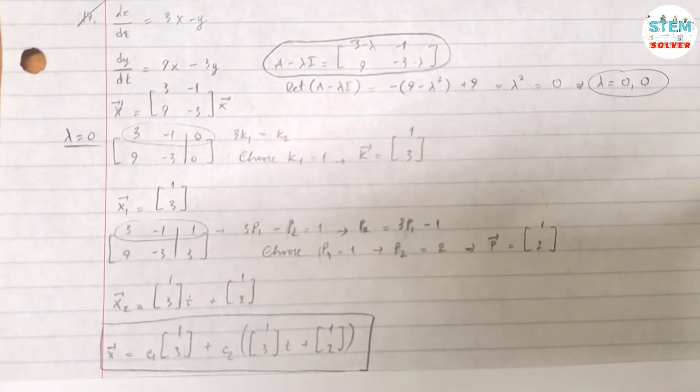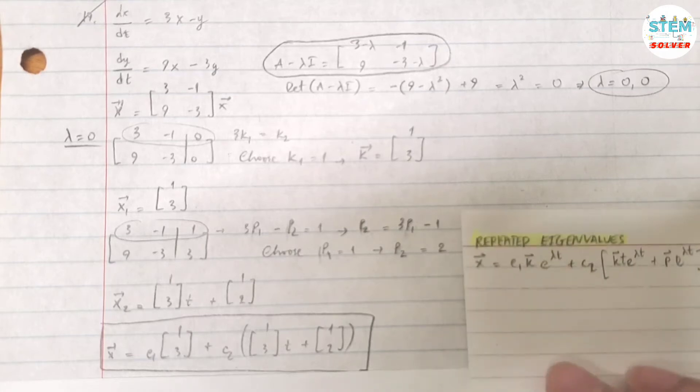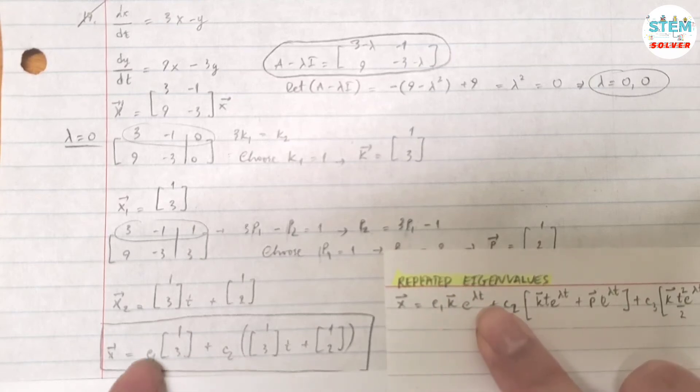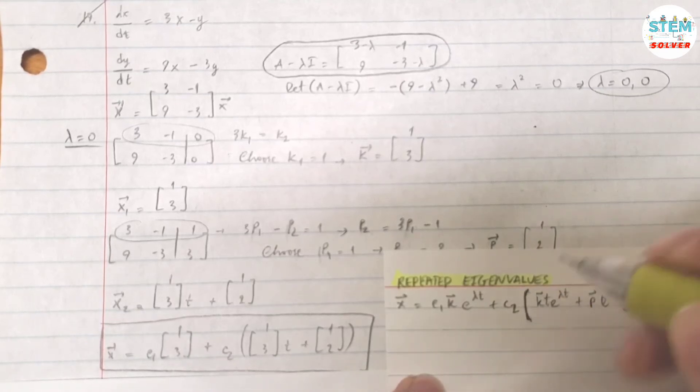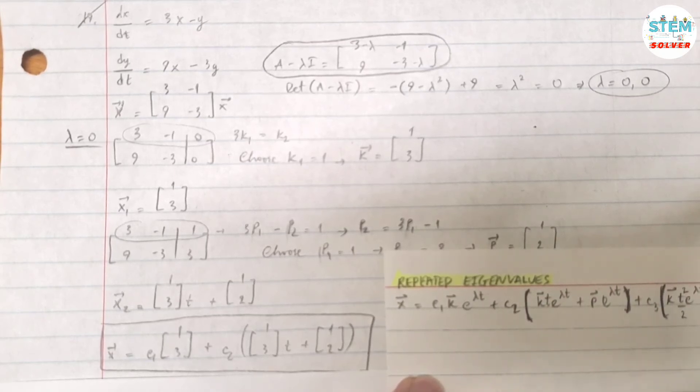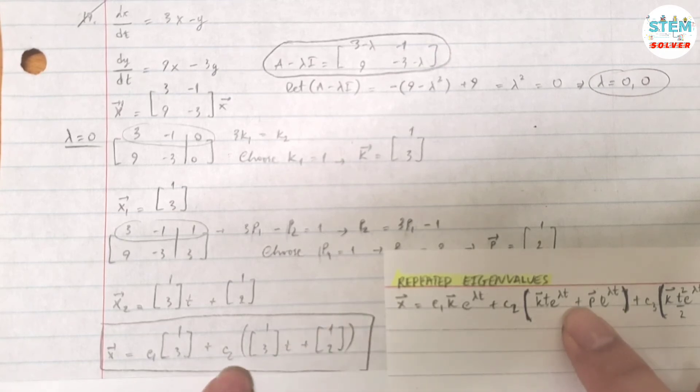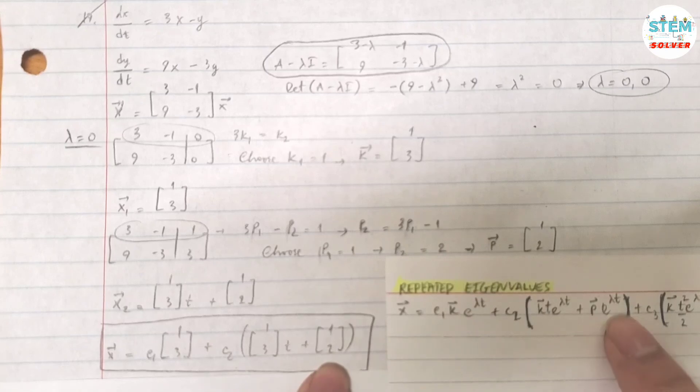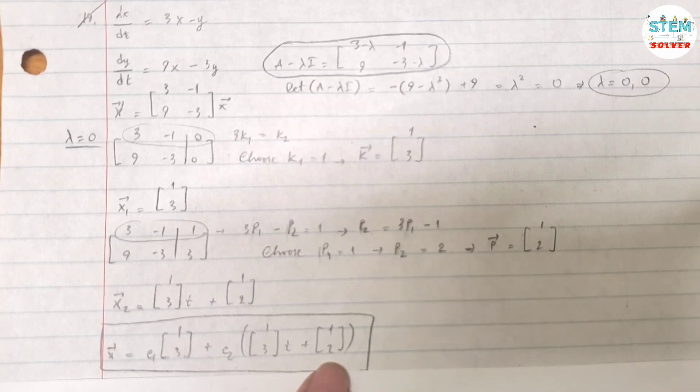Because you have repeated eigenvalues, your final solution is given in this form: vector X equals C1 times K times e to the lambda t. Lambda is 0, so e to the 0 equals 1. Plus C2 times (vector K times t times e to the lambda t plus vector P times e to the lambda t). So C2 times ([1, 3] times t times 1 plus [1, 2] times 1). Here is your final answer, that's it.